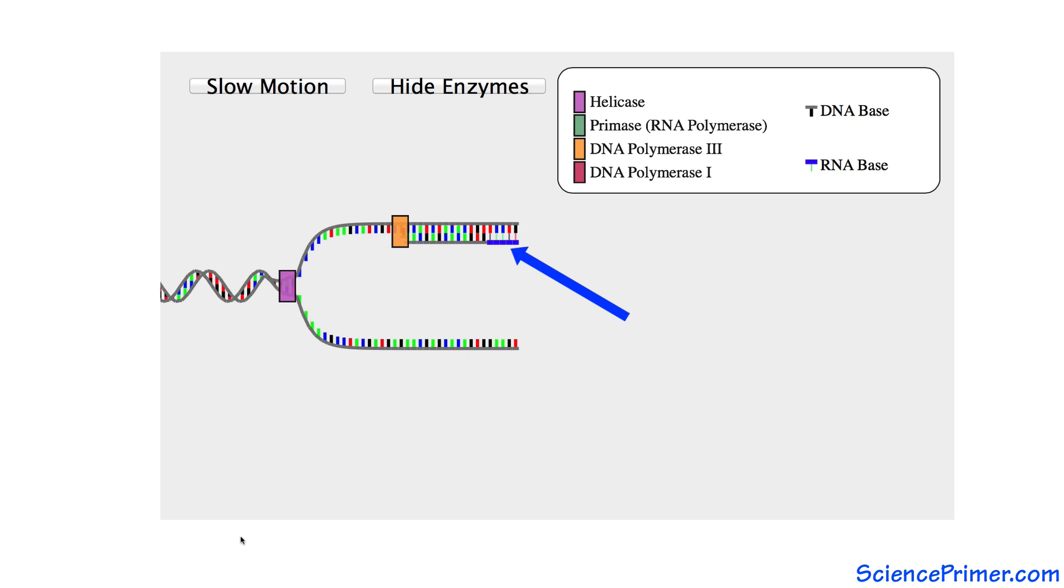RNA primers need to be removed prior to the end of the replication process. DNA polymerase I, which has exonuclease activity, performs this task.